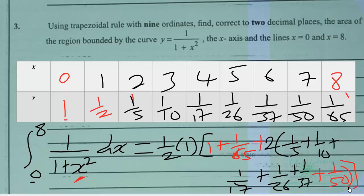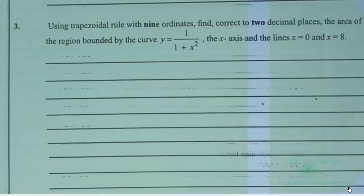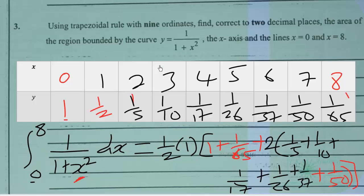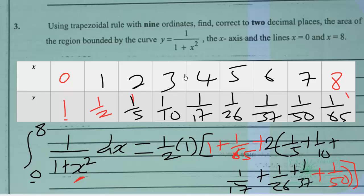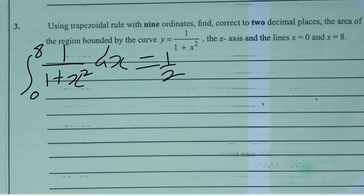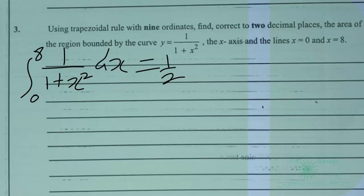So we need to simplify this. This will give us, being equal to half times, so we have 0.5 or 1 over 2. Then inside the parenthesis we have 1 plus 1 over 65, that will give us 66 over 65.